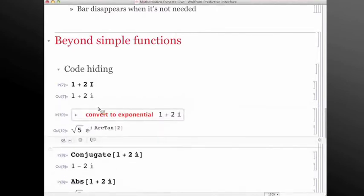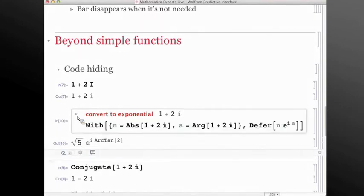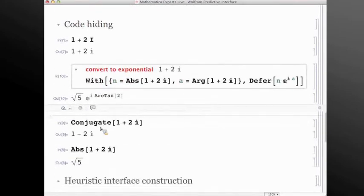But the convert exponential feature of the suggestions bar does not. There's a one-liner that will do this for you, but Mathematica by default will not show you that one-liner. It will just say, oh, you wanted to convert this, here's the result. If you're interested in learning about the input that does this, you can take a look in this way.